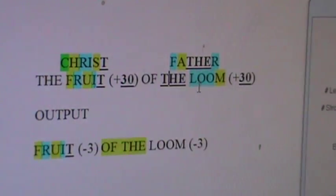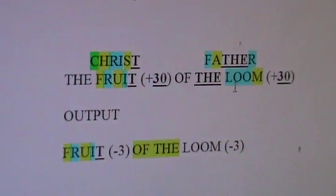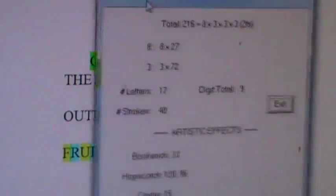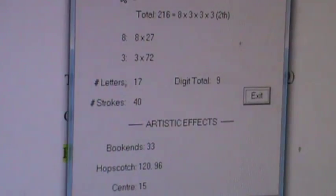But very stunning to put the whole package together for Christ and Father. The Fruit, 30 points higher than Christ. The Loom, 30 points higher than Father. So it's going to make a beautiful love fest. I didn't know it was going to be this good though. It equals quadruple love perfectly.